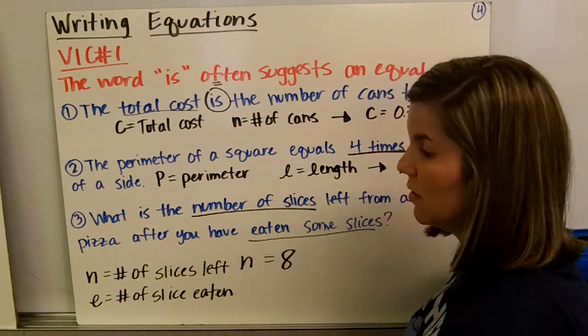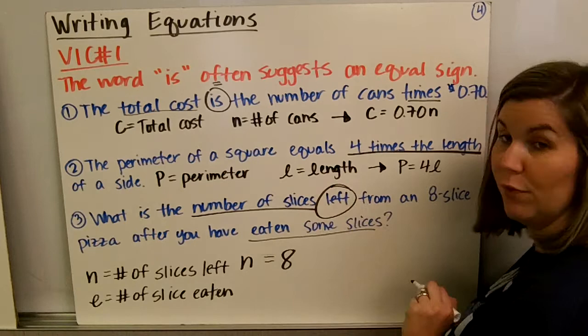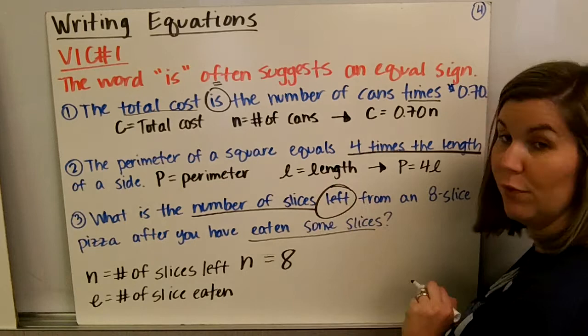So n is the number of slices left over, that's what we want to find. e is the number of slices that have been eaten. Left from means subtraction, so 8 minus e. e is the part that has been eaten, n is what's left over. 8 minus the eaten equals the leftovers.